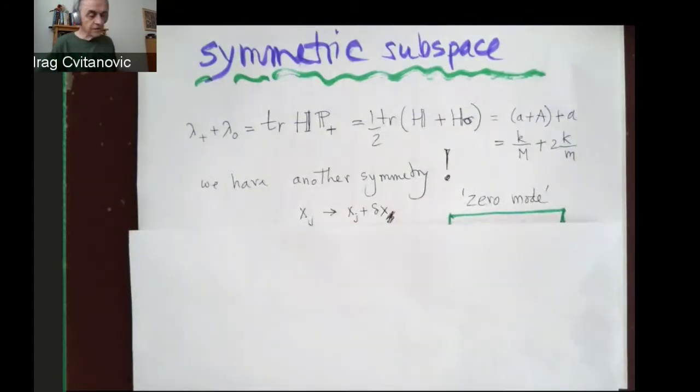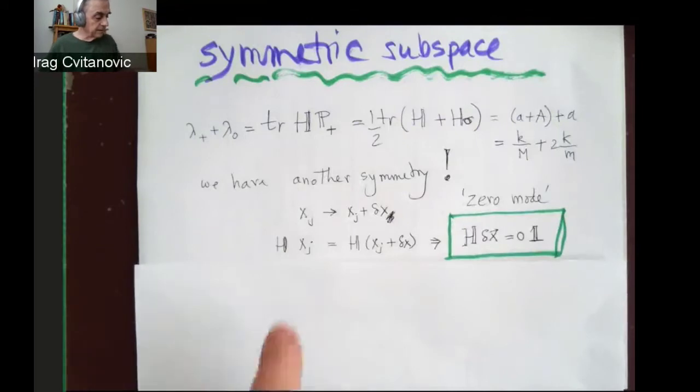So I have a continuous translation symmetry. Whenever you have continuous symmetries, it suffices to understand what happens for infinitesimal change.